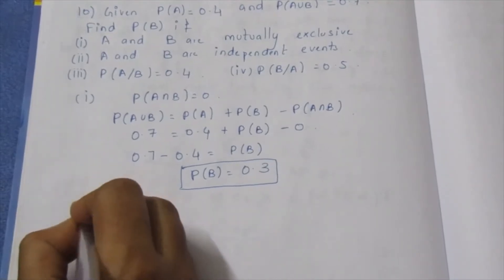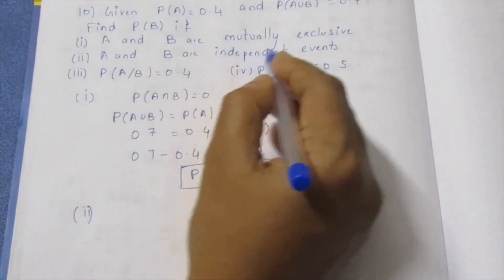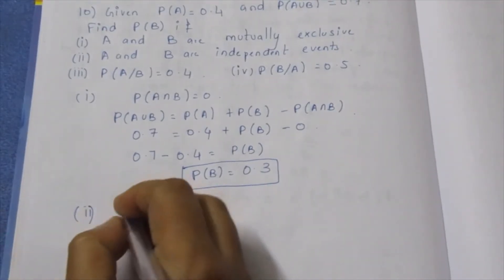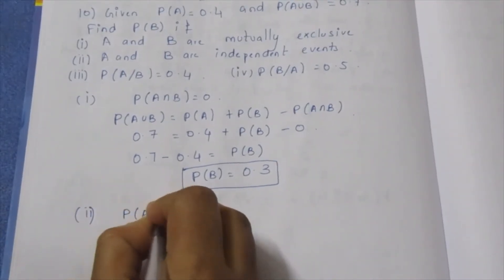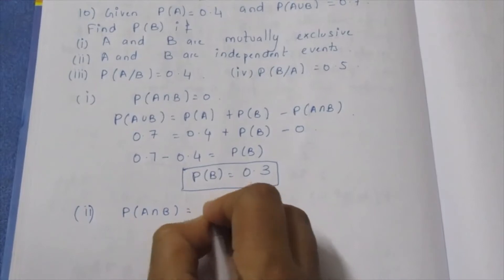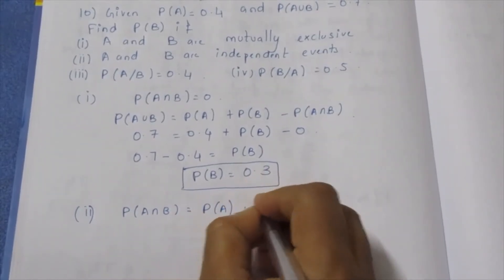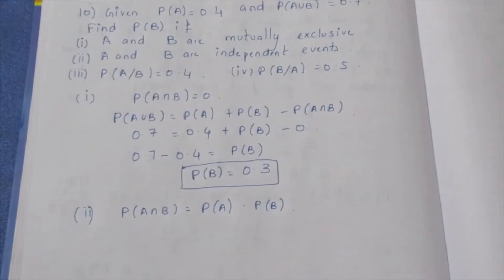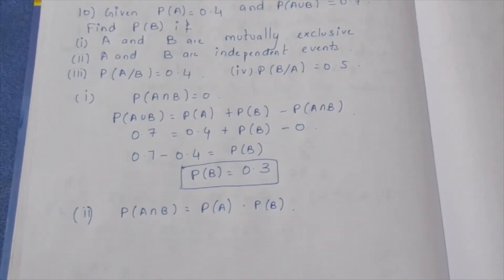So first subdivision: P(B) = 0.3. Second subdivision: A and B are independent events. For independent events, P(A∩B) is equal to P(A) into P(B).